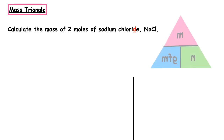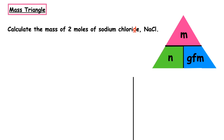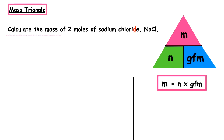This question wants us to calculate the mass of 2 moles of sodium chloride, and the formula is given as NaCl. We identify that the question wants mass, so we write the formula: m = n × GFM. We have the number of moles — 2 — so we can put that into our formula. We have not been given the GFM, but we do have the formula to work it out.